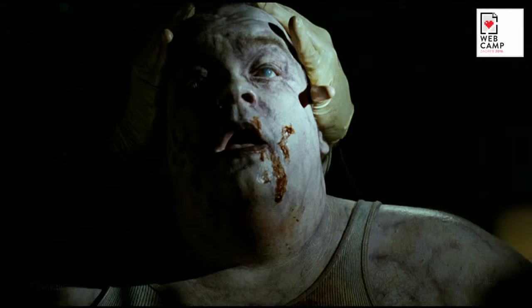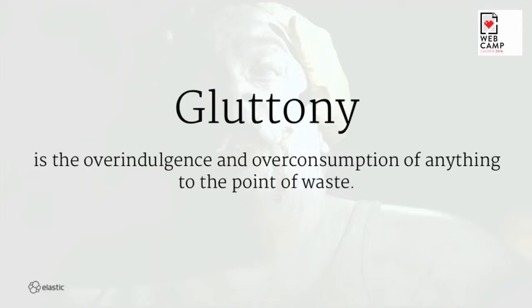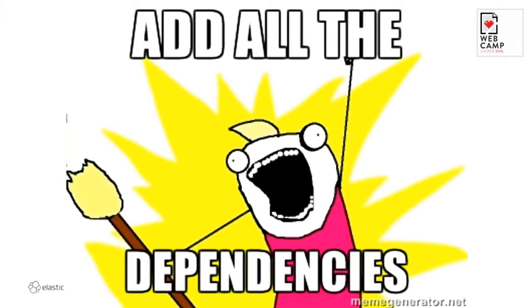Let's jump right into it. Gluttony — the overconsumption or overindulgence to the point of waste. Which could be, for example, add all the dependencies, like all of them. My main assumption here is Java. If you've ever used Java, it is not the lightest thing. It needs to take up a lot of memory, and if you have all these little or big dependencies, you will use up a lot of permgen space or metaspace in JDK8, and it will make your deployments pretty fat.